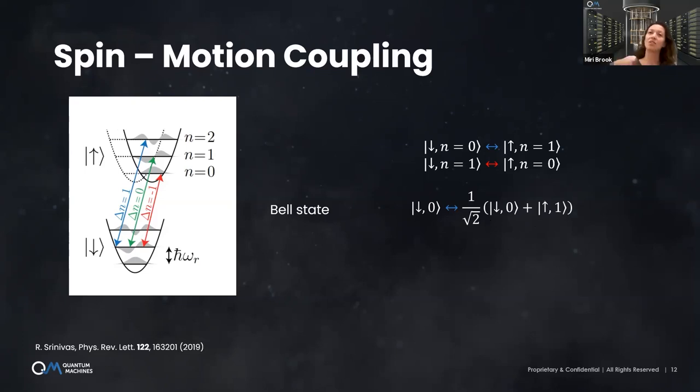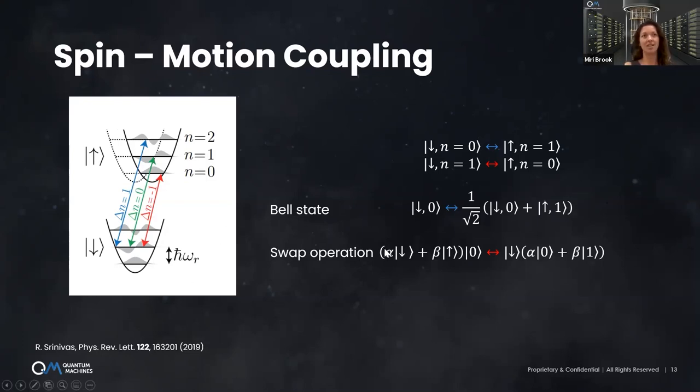I will show you how this can be extended to two ions. In a similar manner, when I do full red sideband excitation, it takes the initial superposition of internal degrees of freedom and turns it into superposition of motion degree of freedom. I can do it back and forth. These are actually the two things I need to do to entangle. Let's imagine we have two ions and we want to entangle them.